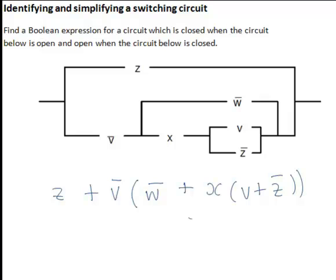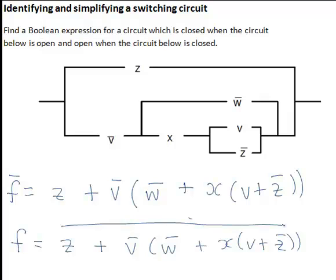But is this the circuit we are interested in? No. Now if the circuit we are interested in is called F, we have actually drawn F bar here because this circuit is closed when the one we want is open and open when the one we are looking for is closed. Hence the circuit F that we require will actually be all of this with a bar over the top because it will be the negation or the opposite case.